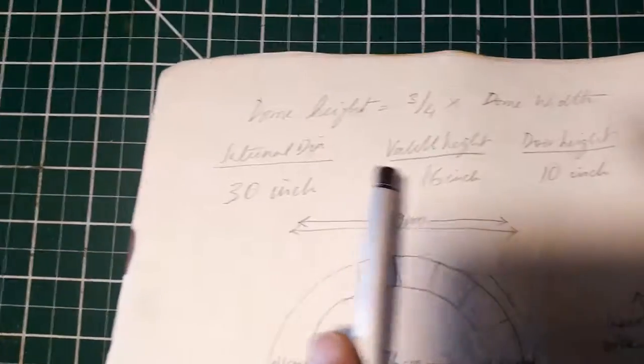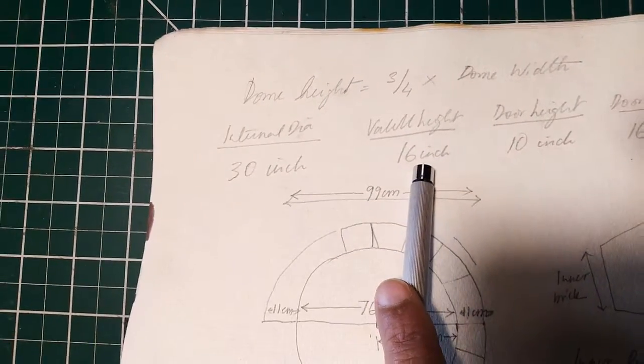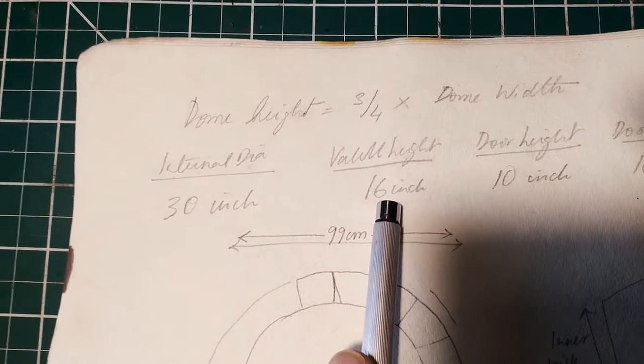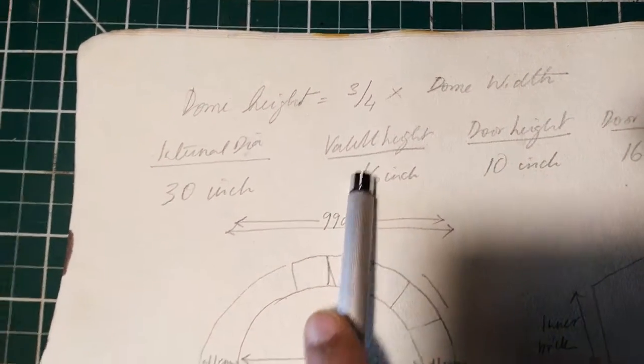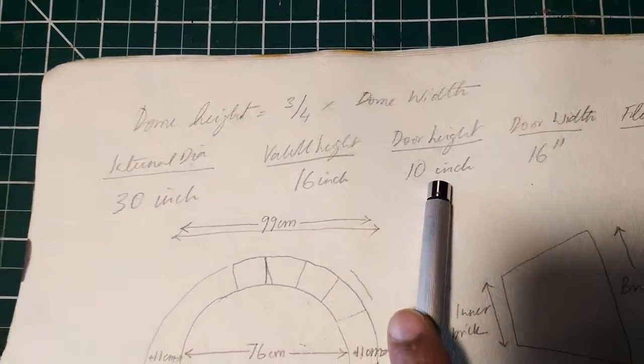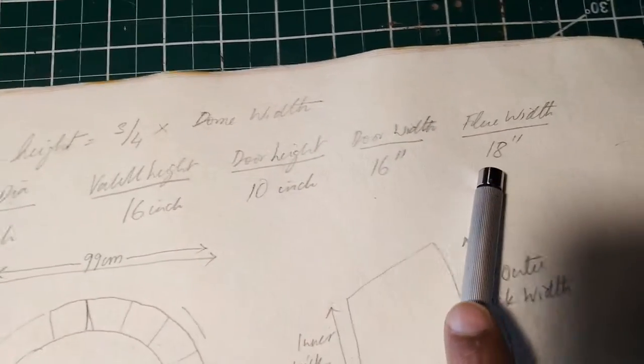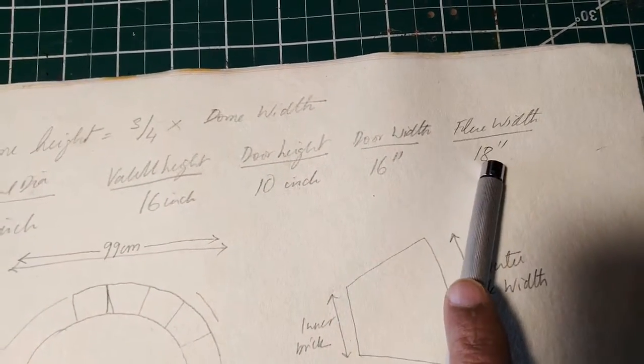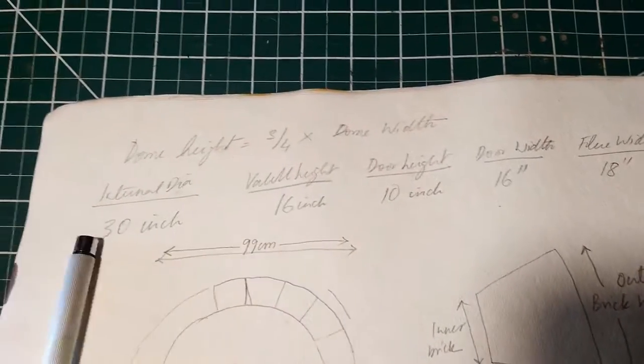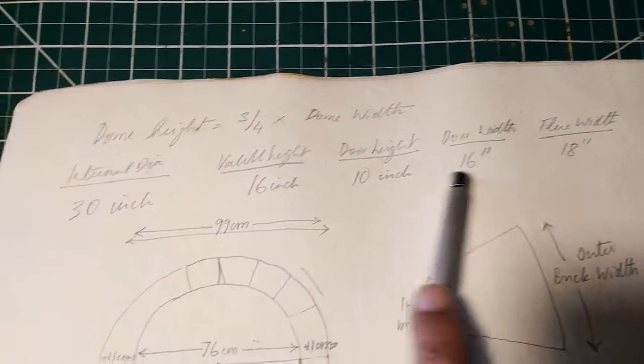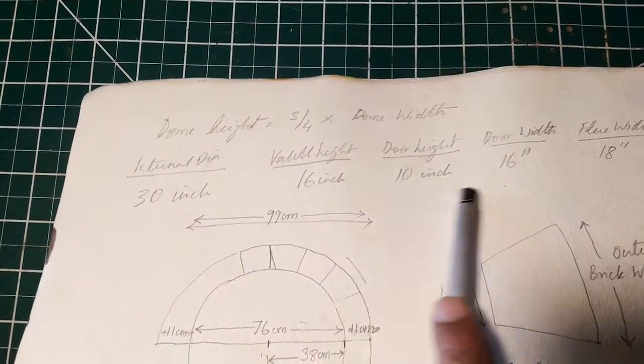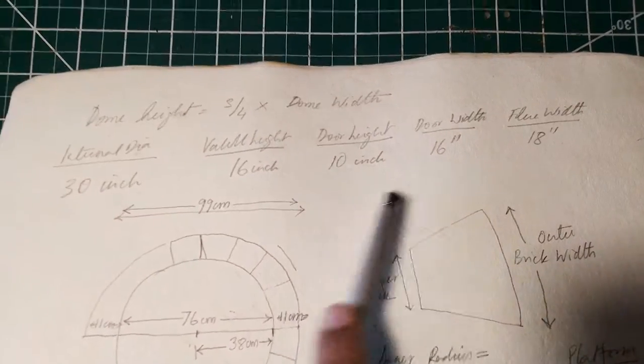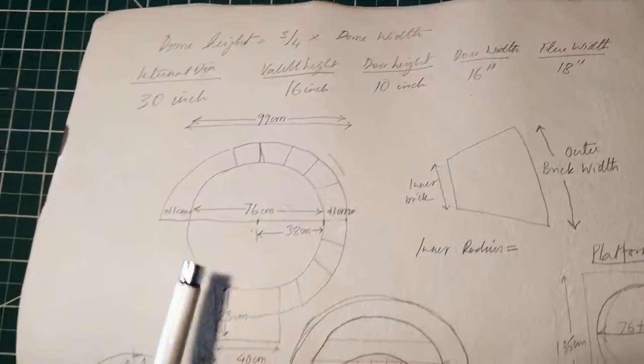If you have an internal diameter, you should have a particular value for the vault height, the door height, the door width, and the flue width. The flue is where the exhaust goes out. These are some basic parameters you should adhere to more or less to ensure that the airflow inside your oven is okay.